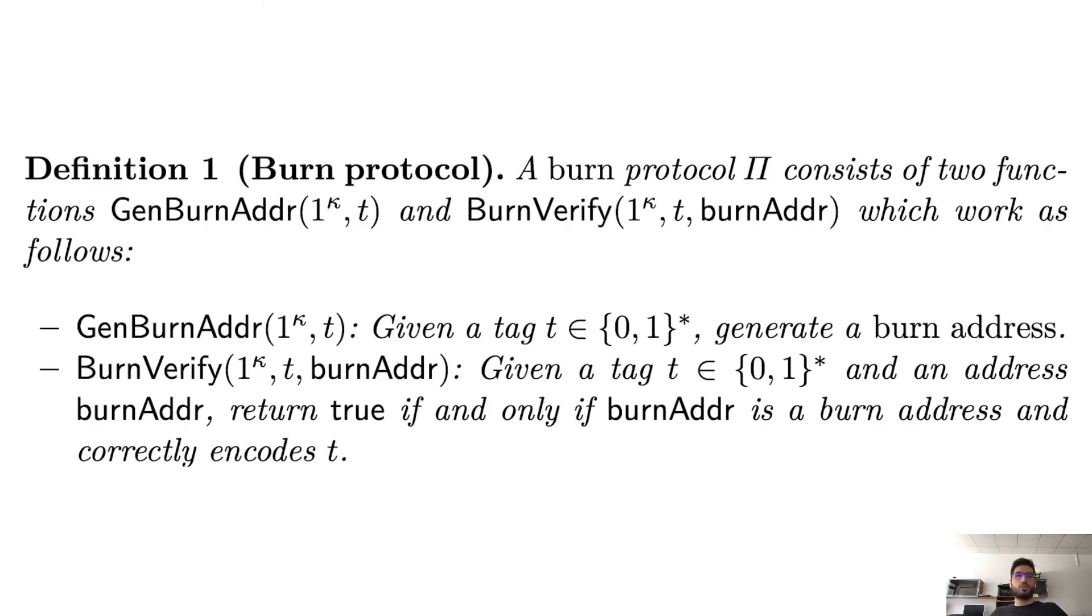Now let's start looking more at our contributions to this. This is a more formal definition of the protocol I just stated, which says basically that a burn protocol consists of two functions. One of these functions generates the burn address, and it's called GenBurnAddr, which takes a security parameter and then the tag t, and it gives you the burn address. Then we have BurnVerify, which Bob, in our example, should run, which also takes security parameter, then the tag, and some address. Then it verifies that this address is actually a burn address for that tag, that it actually encodes it correctly.